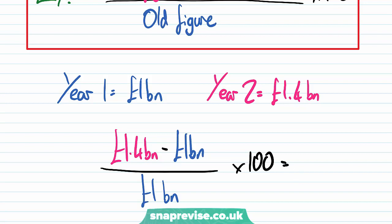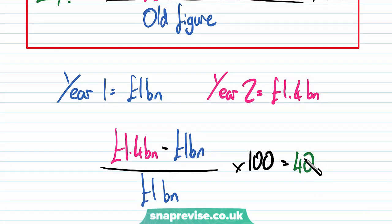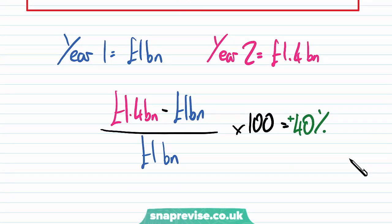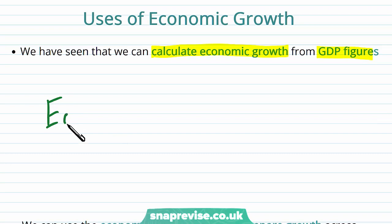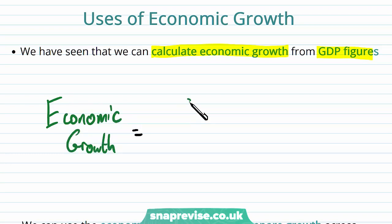That gives us a percentage change equal to 40%. It's a positive number, so positive 40% means there is economic growth — our economic growth is 40%. In a sense, economic growth is the same as our change in GDP.